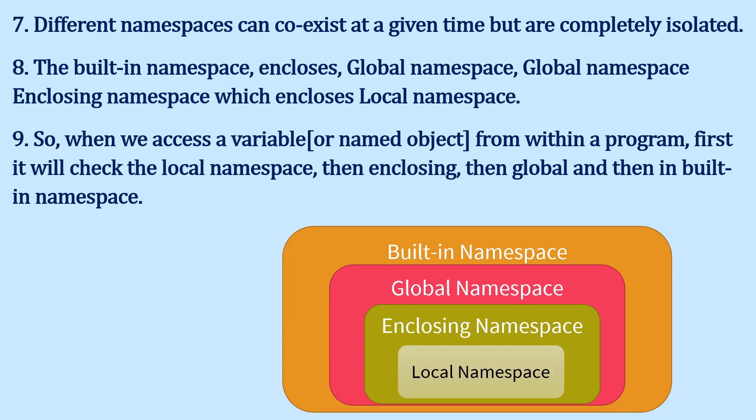All these different namespaces coexist at a given time but are completely isolated. As shown in the diagram, the built-in namespace encompasses the global namespace, which encloses the enclosing namespace, which contains the local namespace. When we access a variable from within a program, Python first checks the local namespace, then the enclosing namespace, then the global namespace, and finally the built-in namespace — this is the LEGB lookup order.